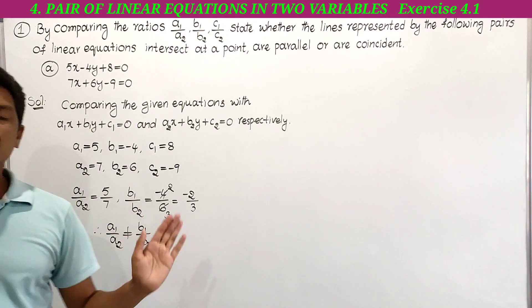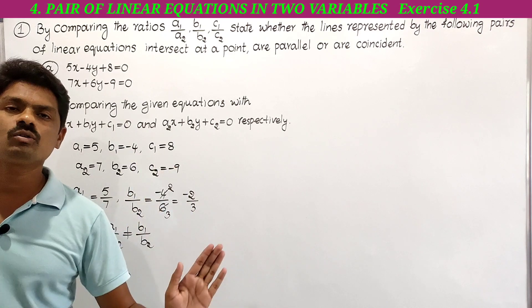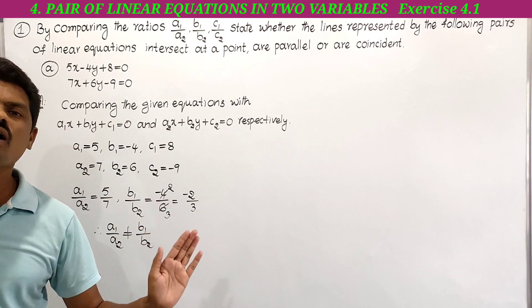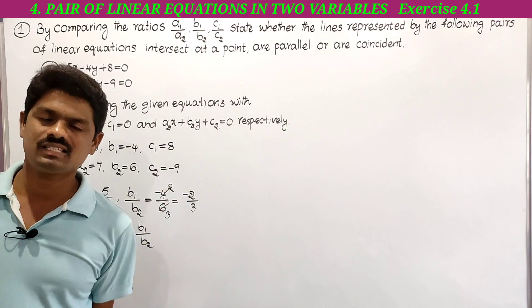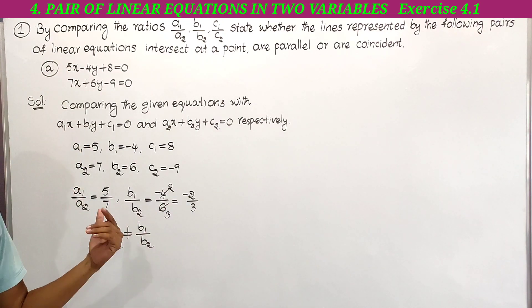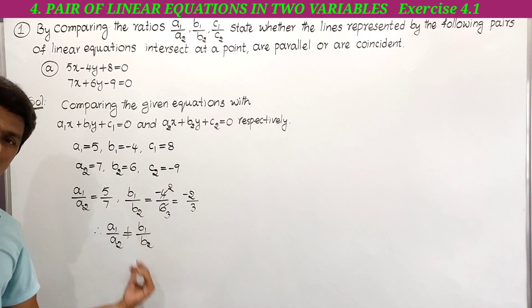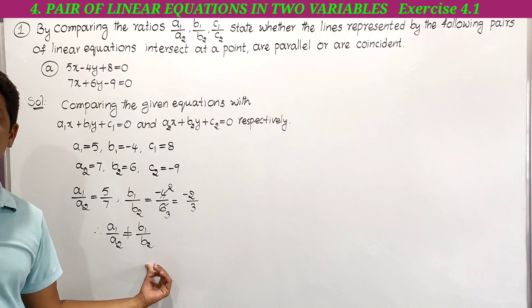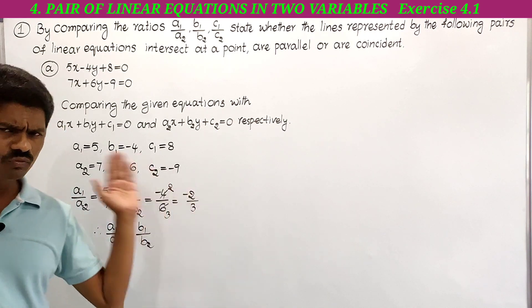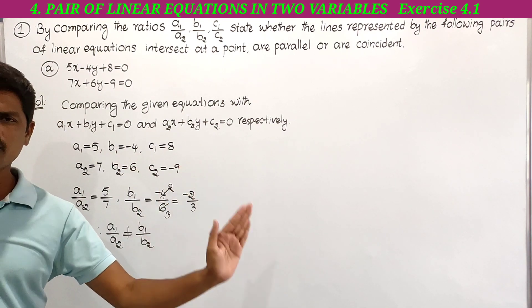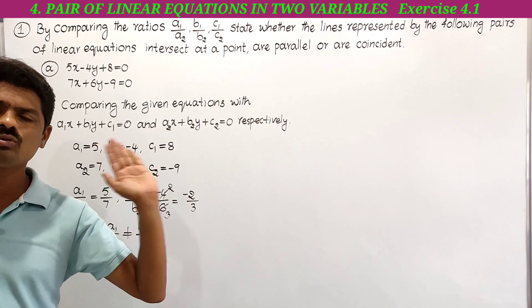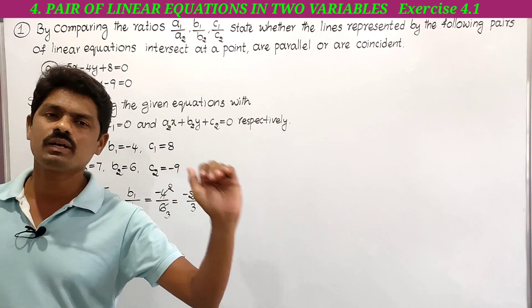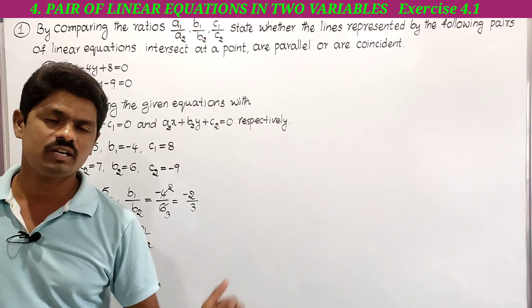If a1 by a2 is not equal to b1 by b2, then we can say the given pair of equations are intersecting lines. If a1 by a2 is equal to b1 by b2 but not equal to c1 by c2, then we can say they are parallel. If all three are equal — that is, a1 by a2 equal to b1 by b2 equal to c1 by c2 — then we can say the given pair of equations are coincident.